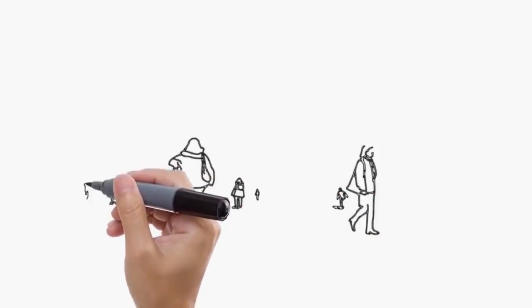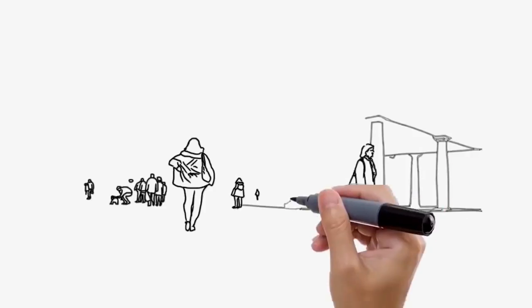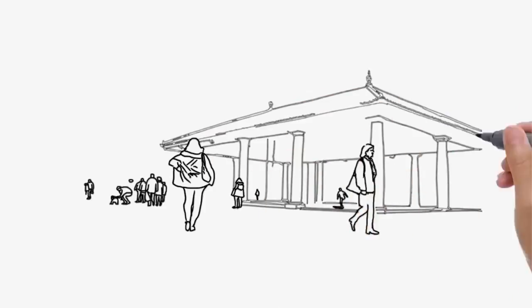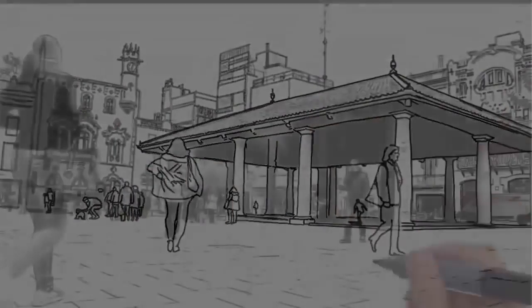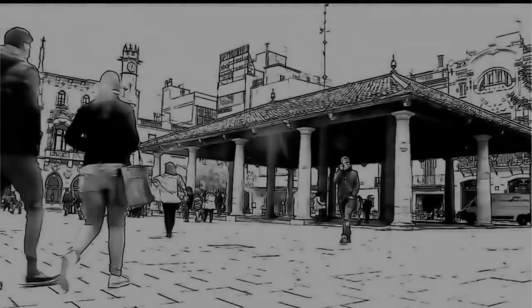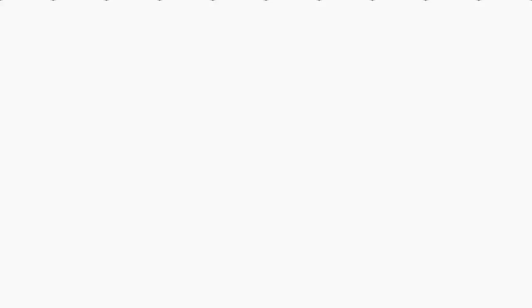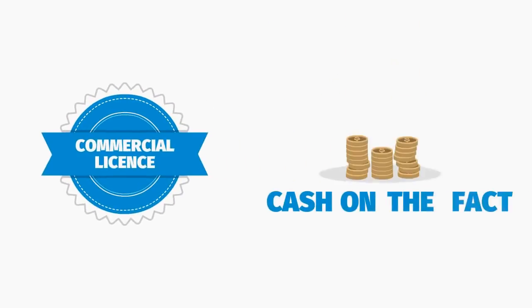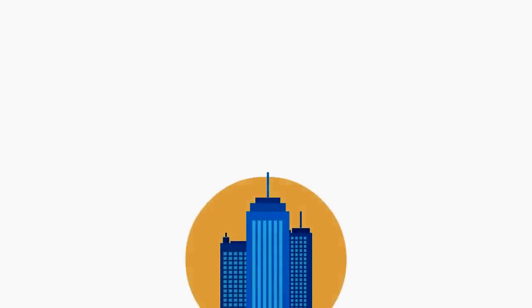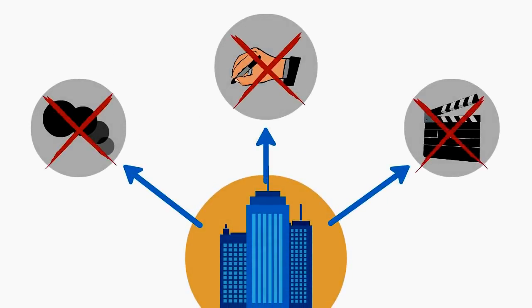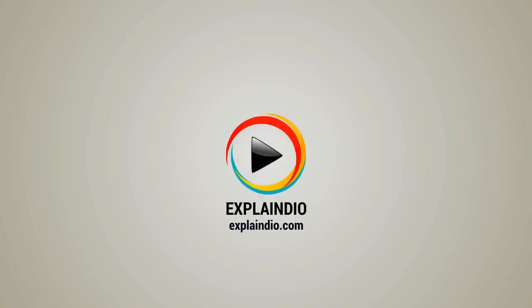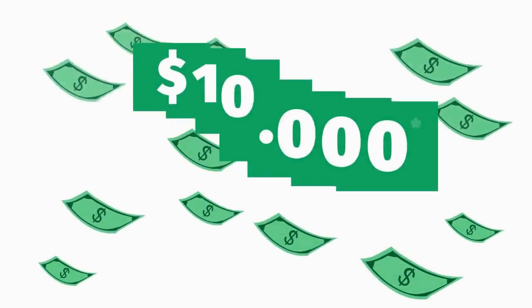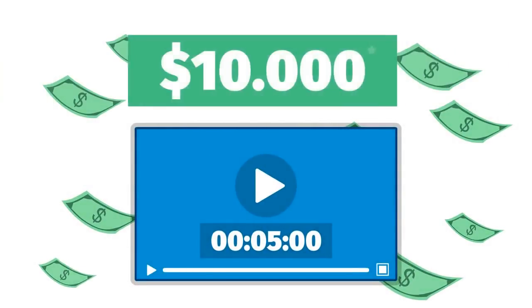Creating professional video content has never been this easy, but we want to give you more than just the software for your own business. Businesses, marketers, and entrepreneurs could pay $10,000 for five minutes of the same type of video which you can make with Explainedio very fast. The Explainedio commercial license allows you to cash in on the fact that almost no businesses have an in-house animation, whiteboard sketch, and motion video content creator — instead they hire freelancers and pay for their service. It means that with Explainedio in your toolbox, you could earn $10,000 for a five-minute video over and over again.